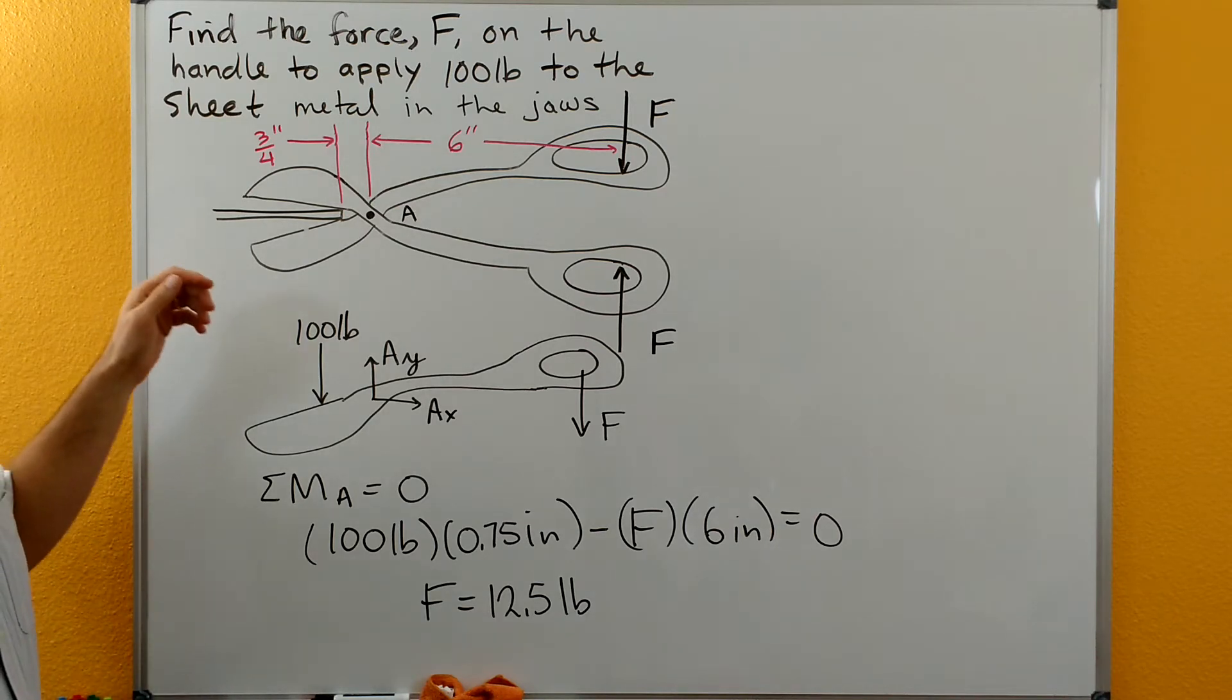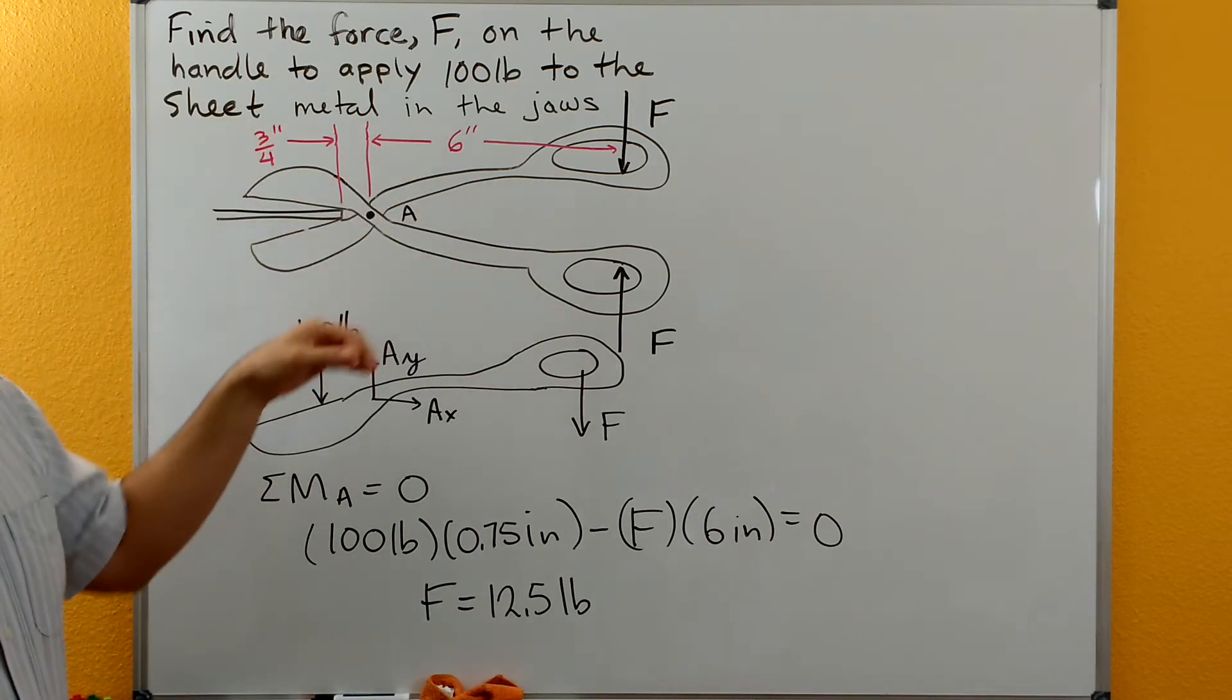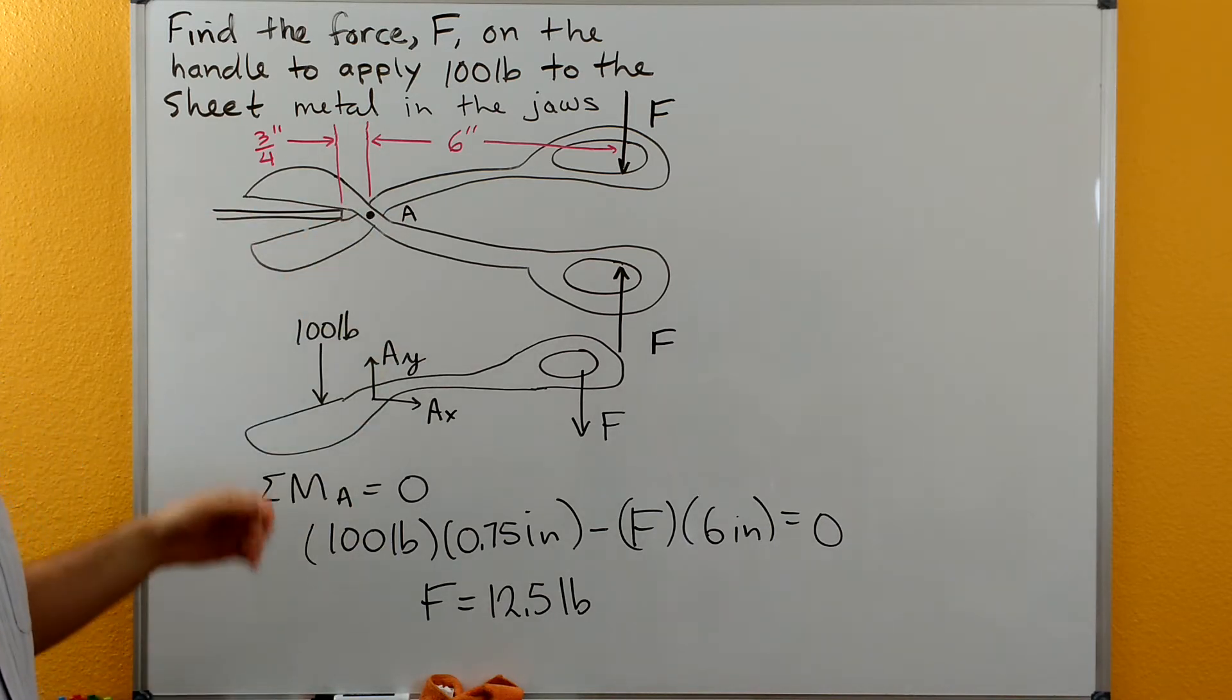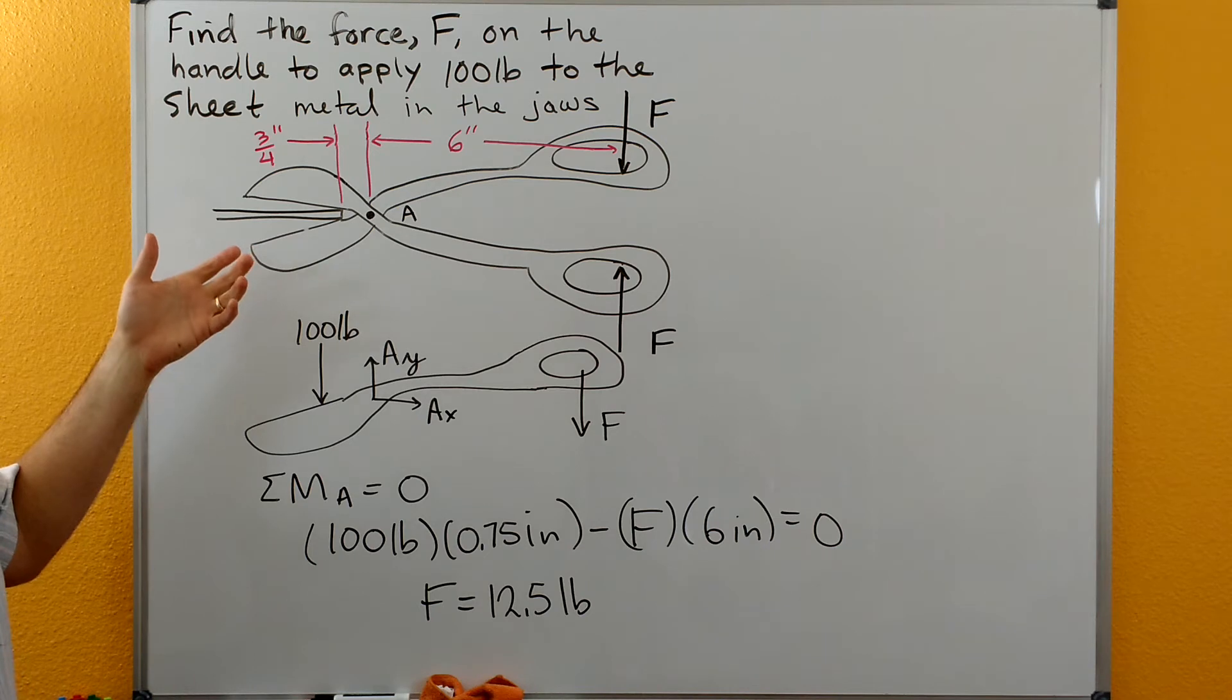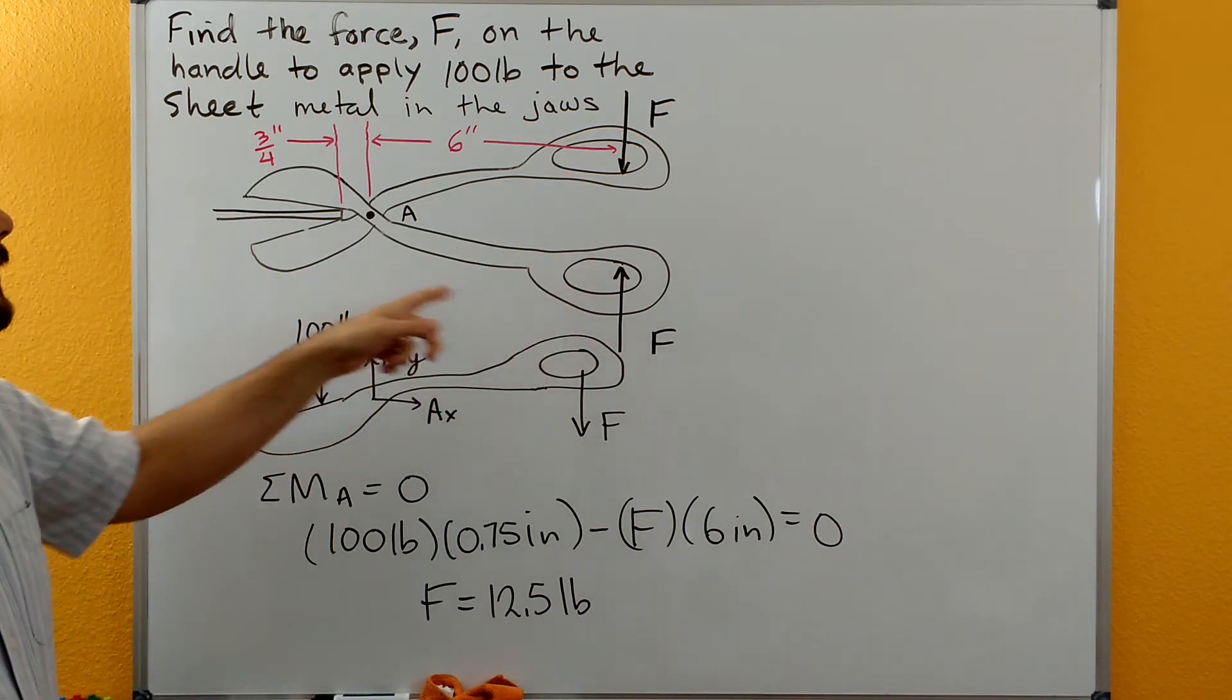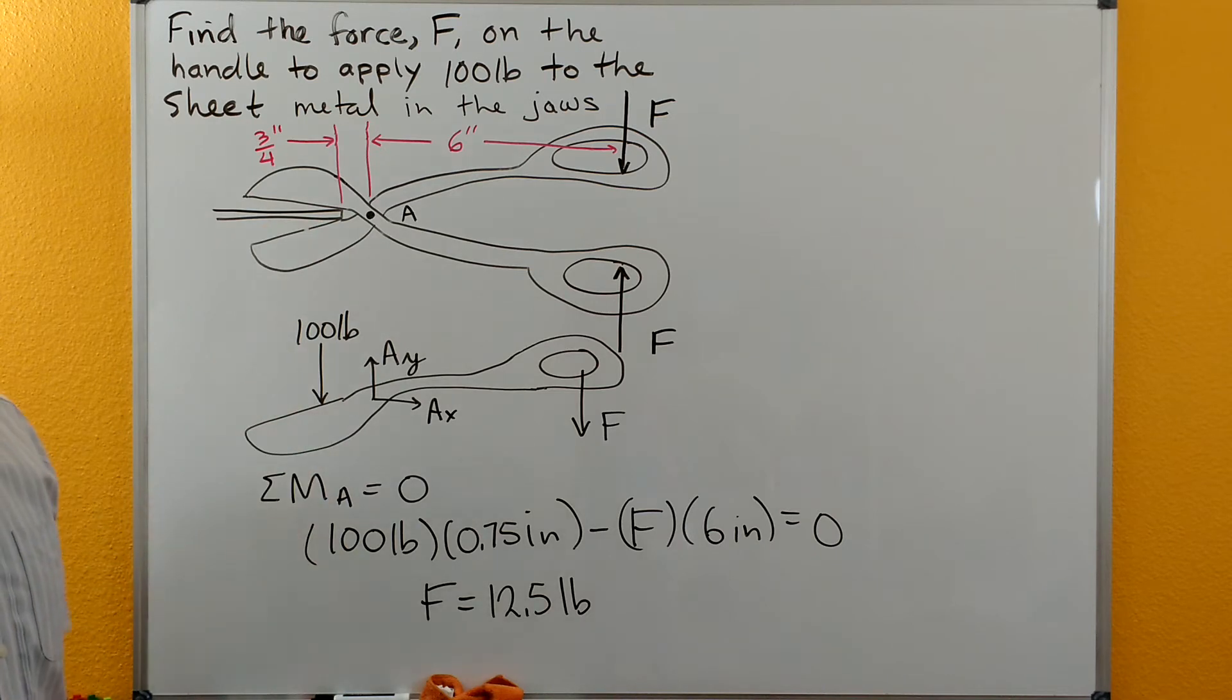So we can analyze either the whole free body diagram or we can start chopping it up into pieces and just look at the pieces. If we looked at the whole free body diagram we would really just get that the two forces F cancelled each other out and the two forces in the jaw cancelled each other out. So we wouldn't really get anything useful out of that.